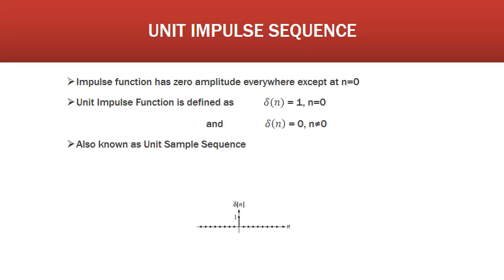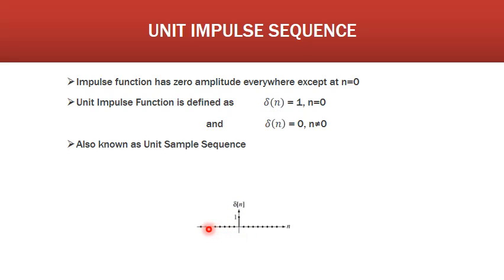The next important discrete time signal is the unit impulse sequence, denoted by δ(n). It has zero amplitude everywhere except at n = 0. It is defined as: δ(n) = 1 at n = 0, and δ(n) = 0 when n ≠ 0. It has value only at n = 0, and for all other values of n, δ(n) = 0. The unit impulse sequence is also known as the unit sample sequence.